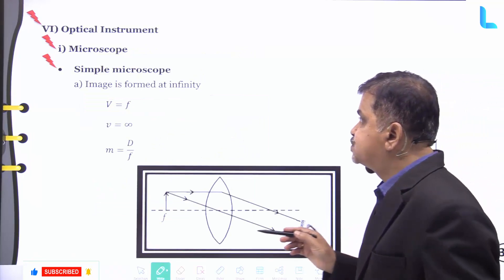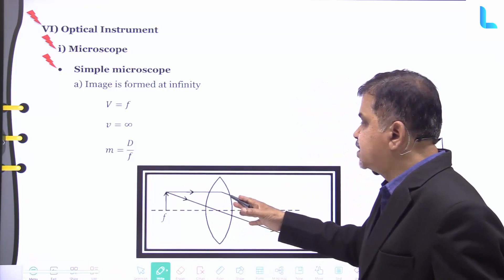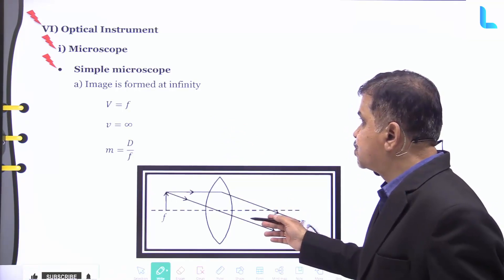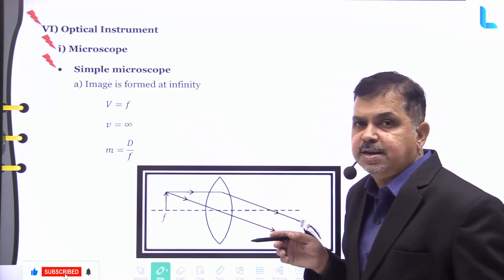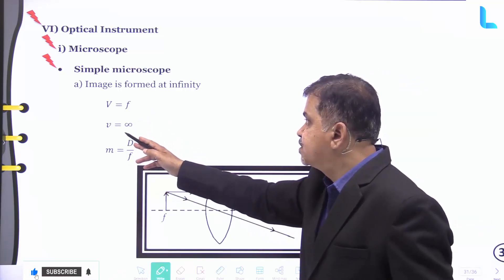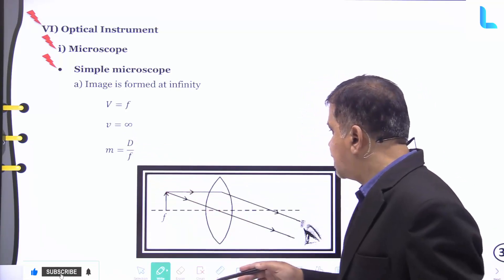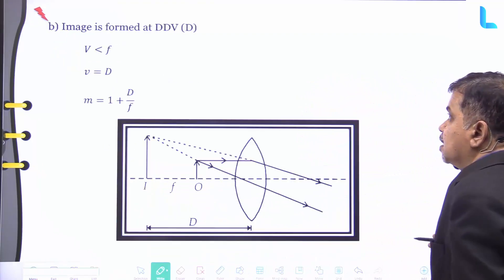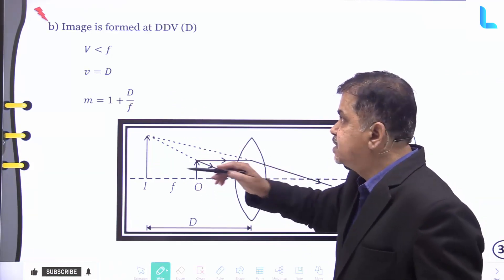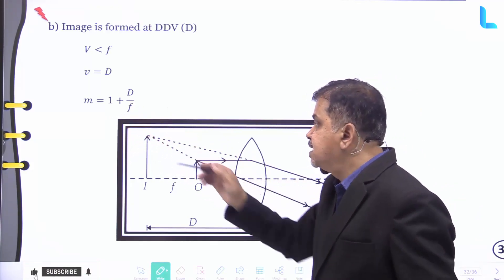For optical instruments, a simple microscope forms an image at infinity when v = f, giving magnification m = D/f. When the image is formed at the near point D (v < f), the magnification is m = 1 + D/f.